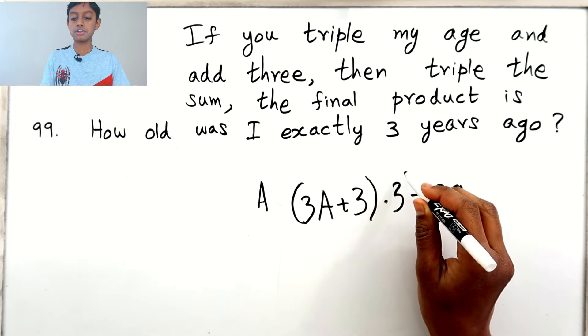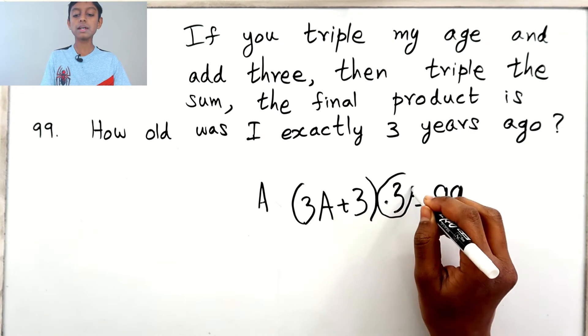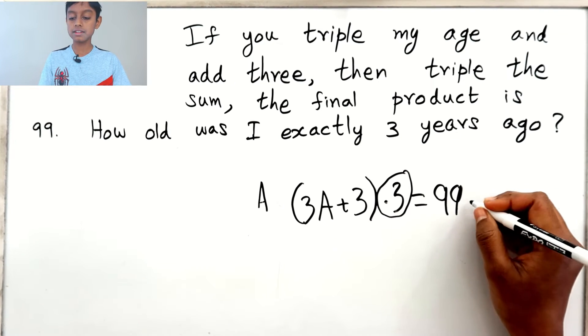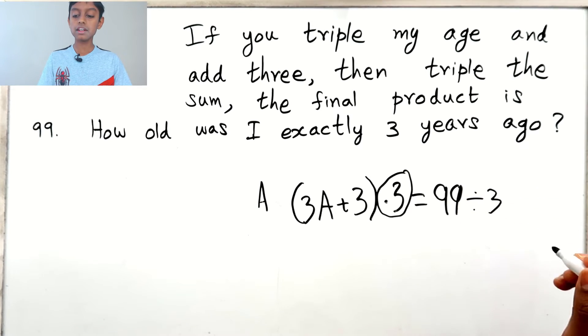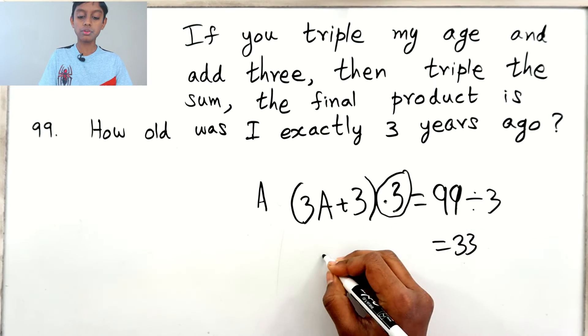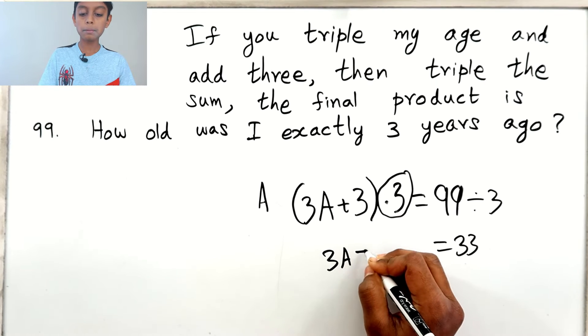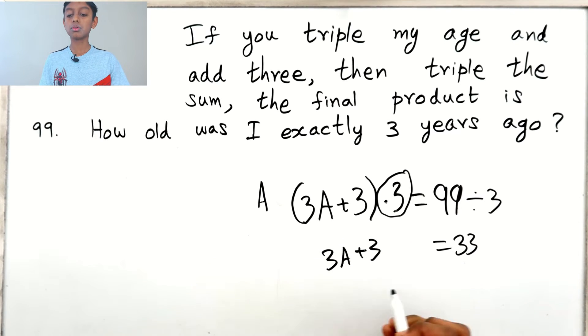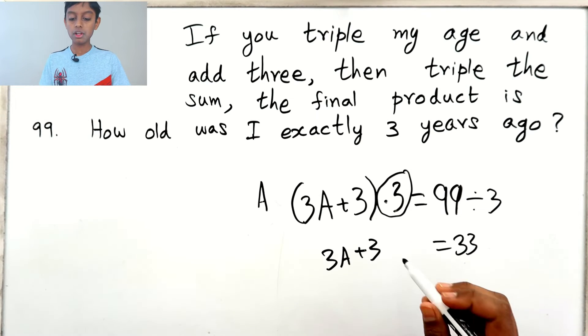Now let's use the inverse operations. Let's take this times 3 to make it divided by 3. So 99 divided by 3 is 33. And this equals 3A plus 3. This equals 33.